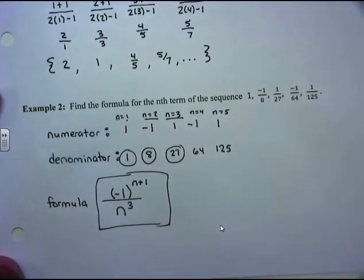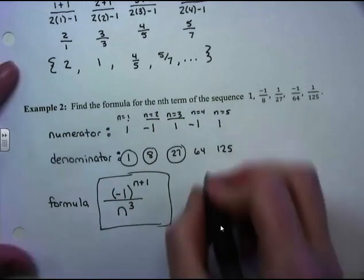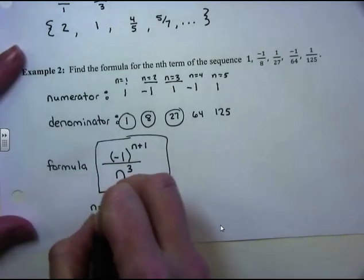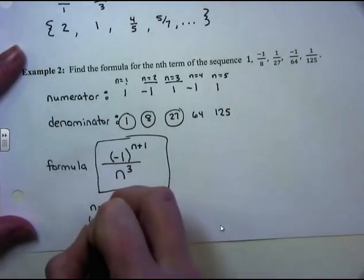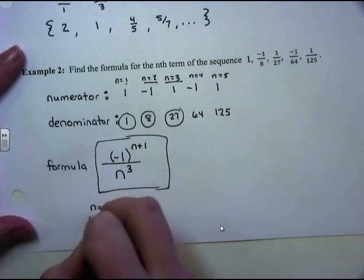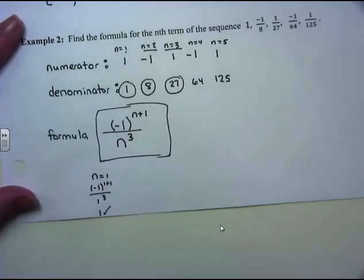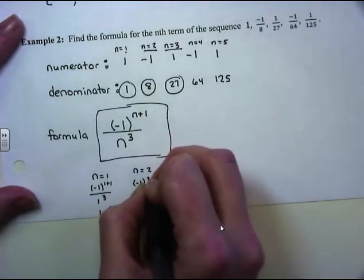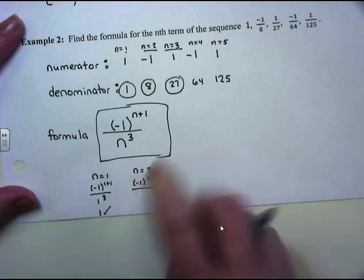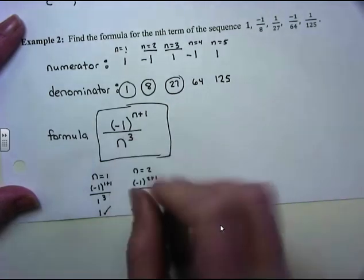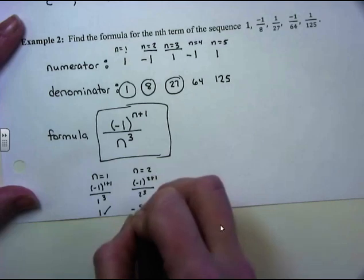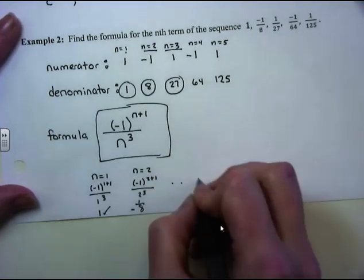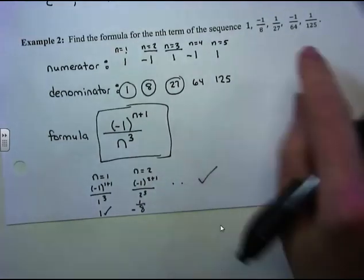It's a good idea to check that you have done this correctly. When we plug in n=1, we get (−1)^(1+1) / 1³ = (−1)² / 1 = 1. When n=2, we get (−1)^(2+1) / 2³ = (−1)³ / 8 = −1/8. You can continue checking and see that the formula does in fact generate the given sequence.